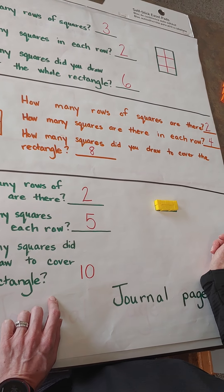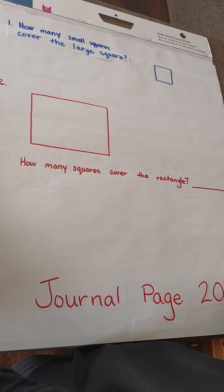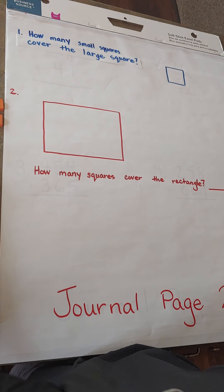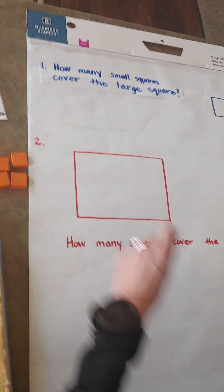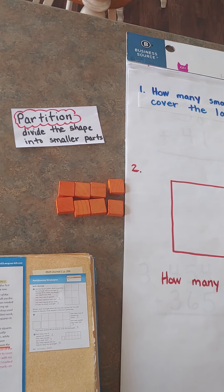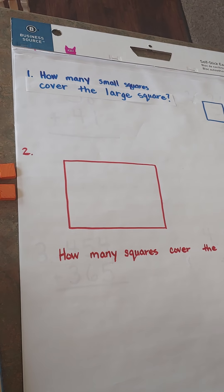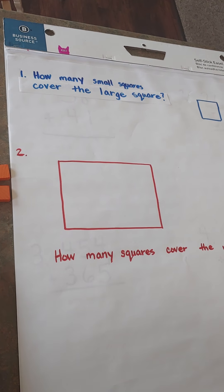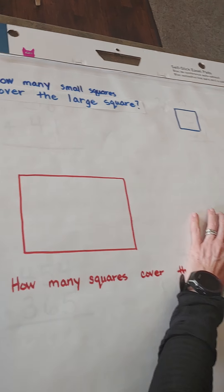And this was all on page 206. Now in your journal, I would turn to page 207. We're still partitioning. Remember, partition means to divide the shape into smaller parts. I'm going to use my small squares here, friends. The question says, how many small squares cover the large square?